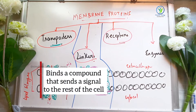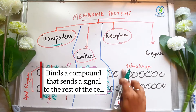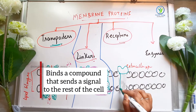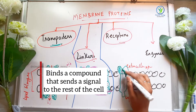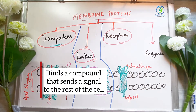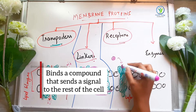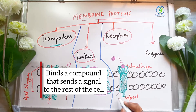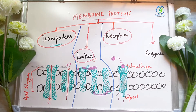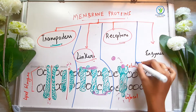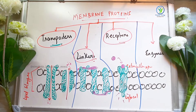Next one is receptors. This is a transmembrane protein. If a compound binds to the receptor and it becomes active, it will bind the total protein active, and the signals will transfer to the rest of the cells. So receptors are mainly involved in signal transduction.